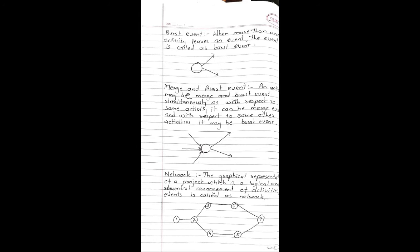Next concept: Merge and burst events. An activity may be merge and burst event simultaneously, as with respect to some activity it can be merge event and with respect to some other activities it may be burst event. In this case, these three arrows are coming together and these two arrows are leaving from the event, so this is the merge and this is the burst.